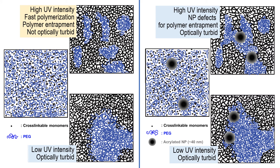The left diagram shows the case of crosslinking of monomers with PEG. Under high UV intensity, the resin monomers rapidly polymerize, resulting in PEG entrapment without optical turbidity. In the low UV intensity case, PEG has more chance to phase separate from the network due to the slow polymerization, giving rise to optical turbidity.